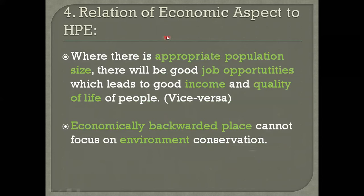The fourth relation is of the economic aspect to health, population, and environment. Where there is an appropriate population size, there will be good job opportunities. When the population size is manageable, people can find good jobs, which leads to income and a better quality of life. But if the population size is too large, there will be competition for jobs, leading to low income and low quality of life.